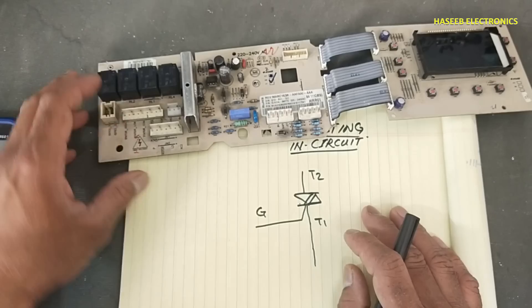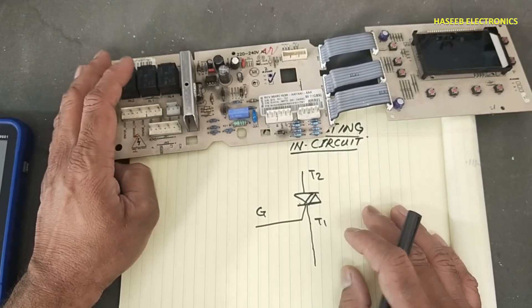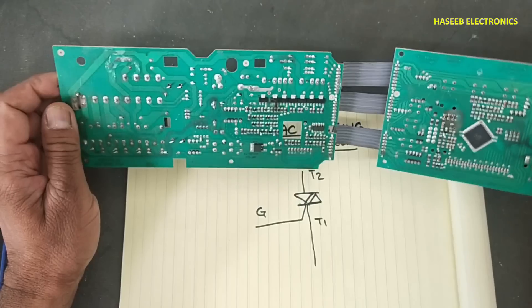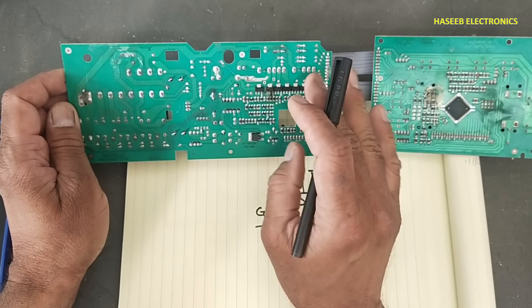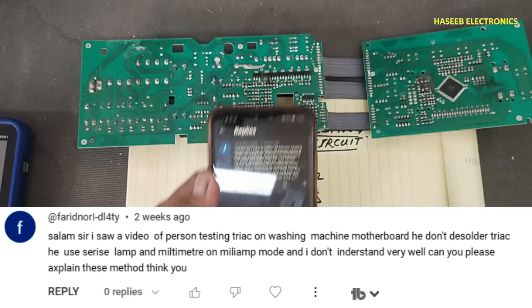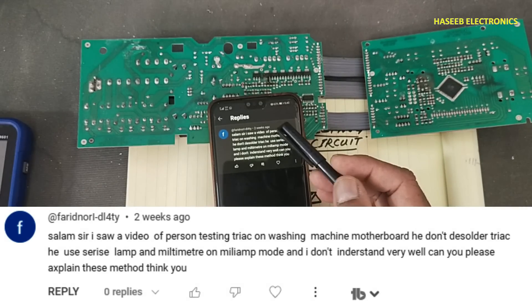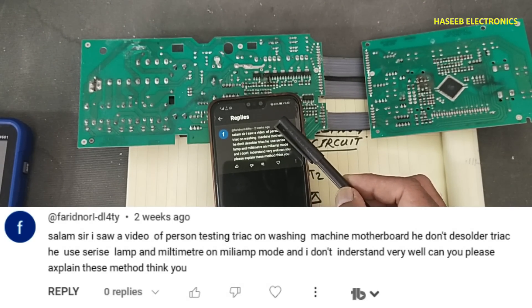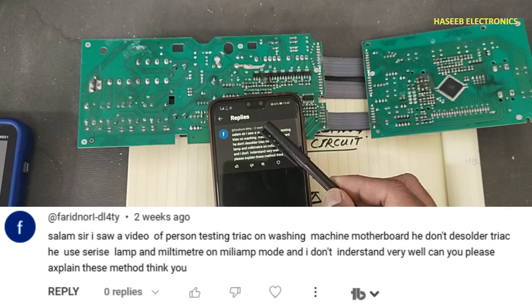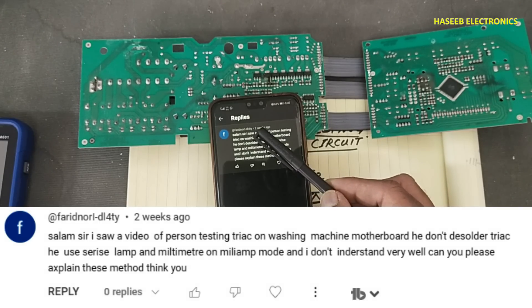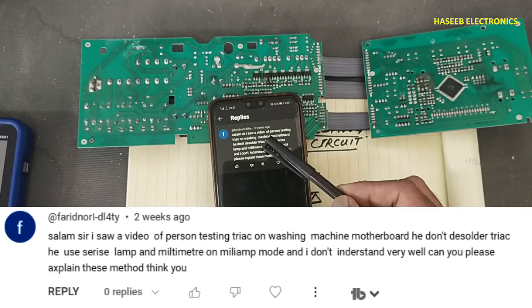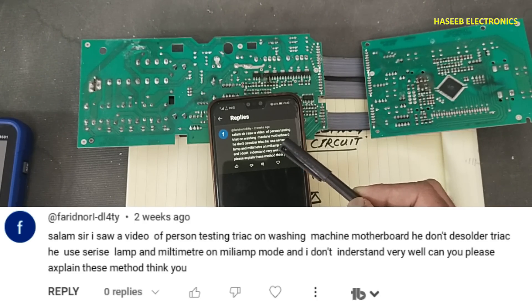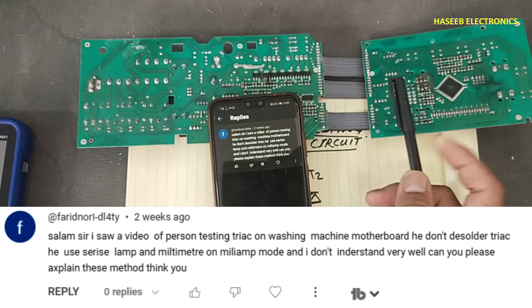Welcome back to my channel. I have this Beko washing machine circuit board using a Z0103M triac. How can we test it within circuit safely? This is based on a viewer comment. My viewer saw a video of someone testing a triac on a washing machine motherboard without desoldering it. They used a series lamp and multimeter in milliampere mode, and asked me to explain this method.